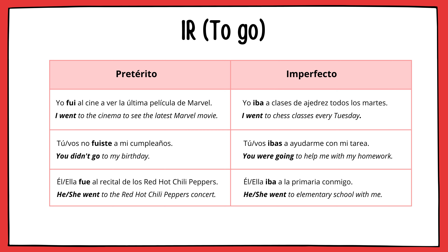Let's get into the past tense. First we'll go through the singular forms of both the pretérito and the imperfecto for the verb ir. Yo fui al cine a ver la última película de Marvel. Tú no fuiste a mi cumpleaños. Él o ella fue al recital de los Red Hot Chili Peppers. Yo iba a clases de ajedrez todos los martes. Tú ibas a ayudarme con mi tarea.